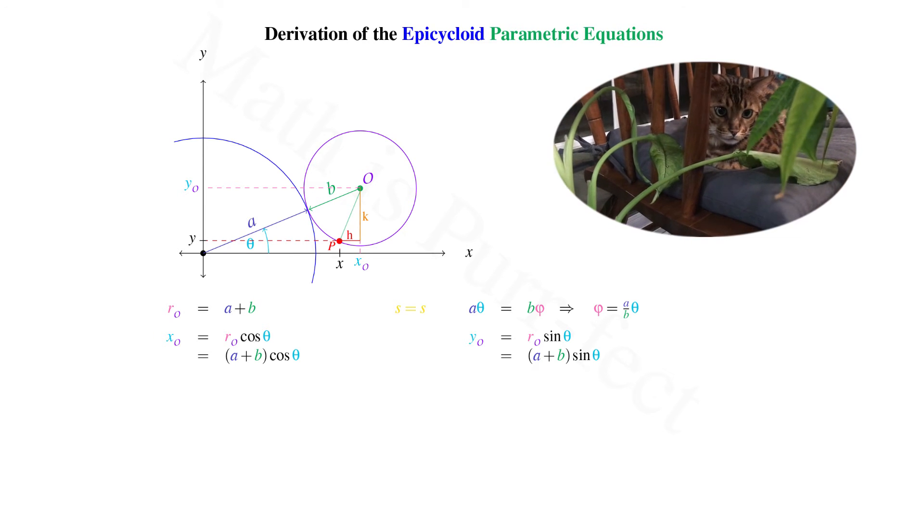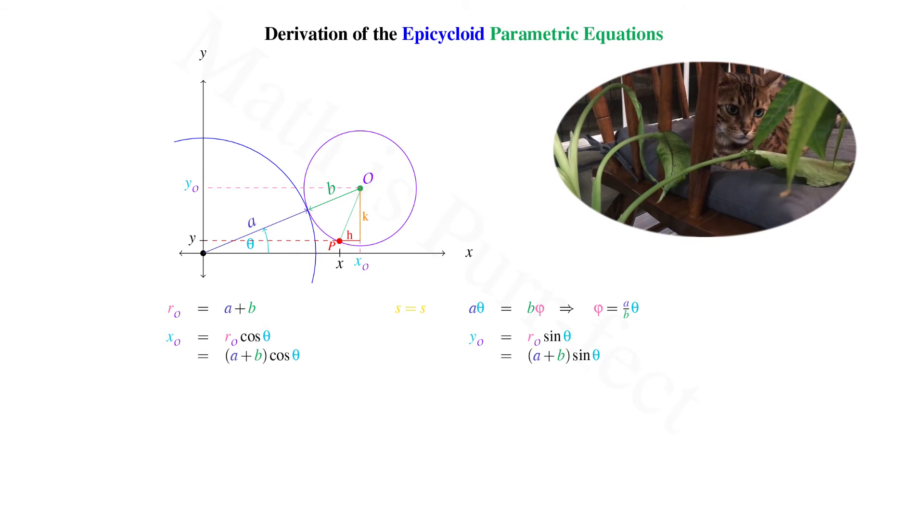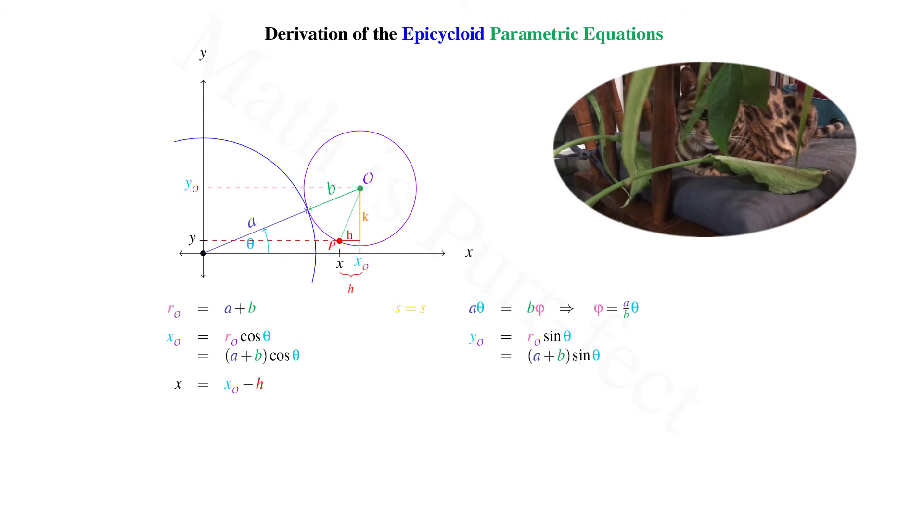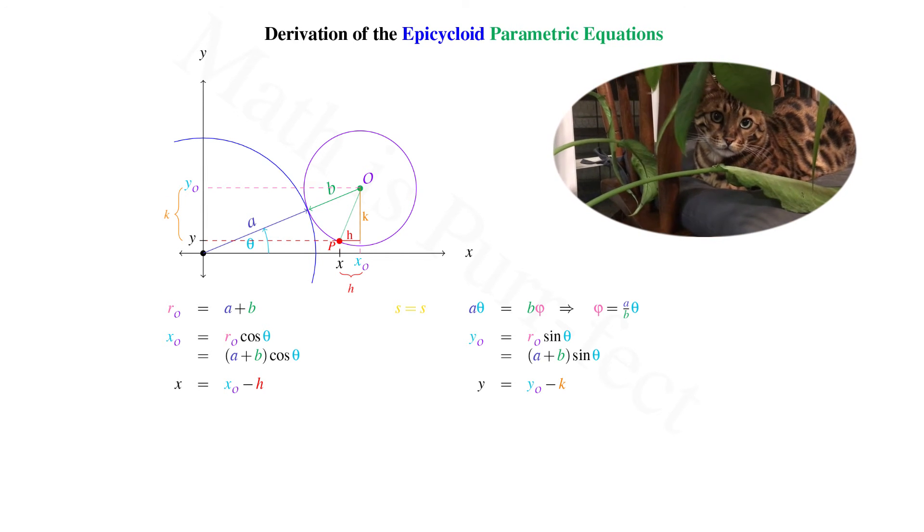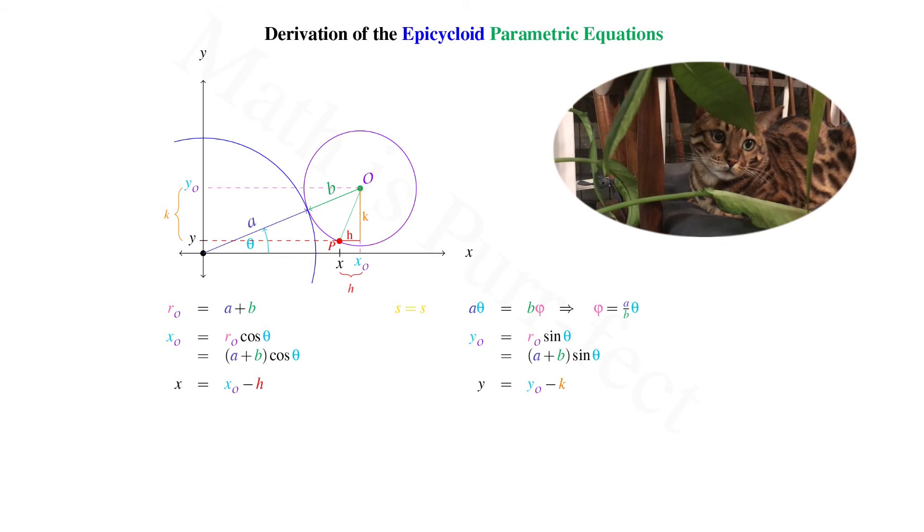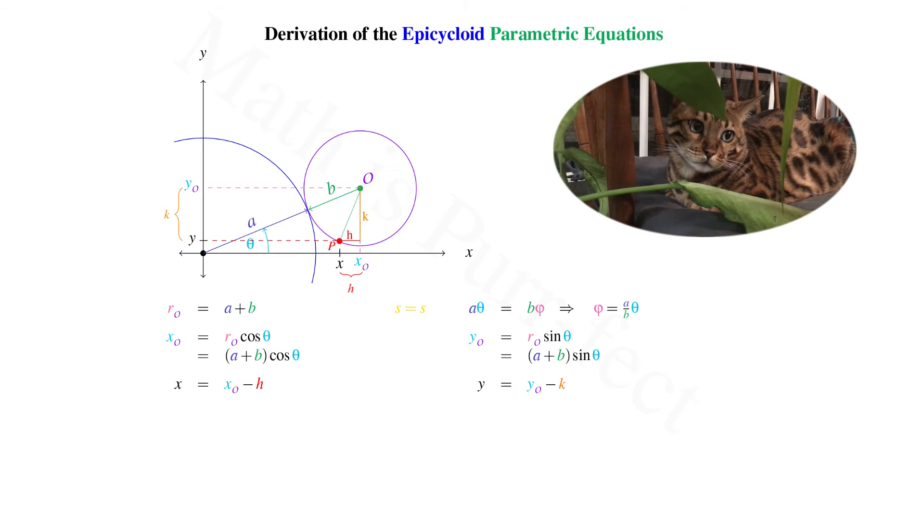Hence the X and Y coordinates of point P can be found as follows. X will be X sub O minus H, and Y will be Y sub O minus K, as pictured.